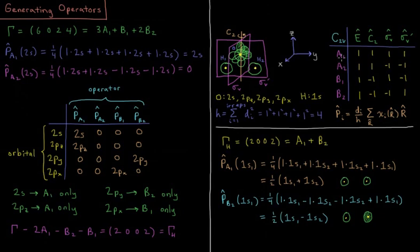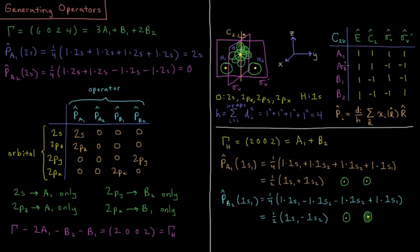There are four EREPs in the C2V point group: A1, A2, B1, and B2. The A's are symmetric with respect to C2, the B's are antisymmetric, the 1s are symmetric with respect to sigma V, and the 2s are antisymmetric with respect to sigma V.